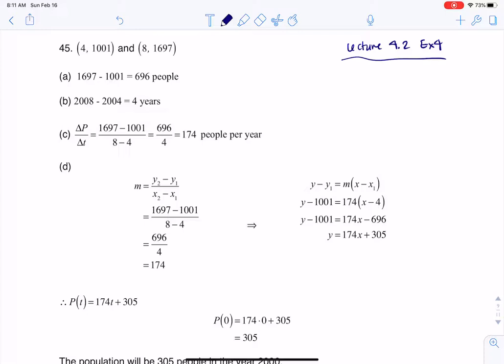We were told the school population in 2004 was 1,001, and in 2008 it was 1,697. I opted to use my base year to be 2000 in this problem. The first question says how much did the population change between those two years? Well, if I take a look at the difference in population, it grew by 696 people.